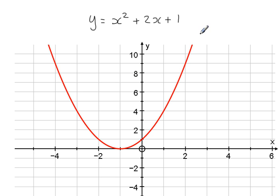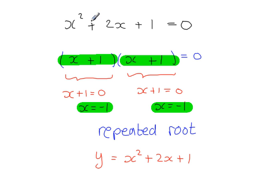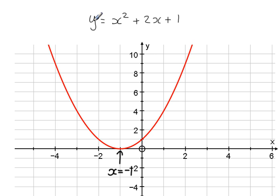This is the graph of y equals x squared plus 2x plus 1. As you can see, when x is equal to minus 1, the curve just touches the x-axis at that point and then goes up again. So x equals minus 1 is a root. The equation we were solving was equal to 0 because the y-coordinate on the x-axis is 0 — that's the point we're interested in.